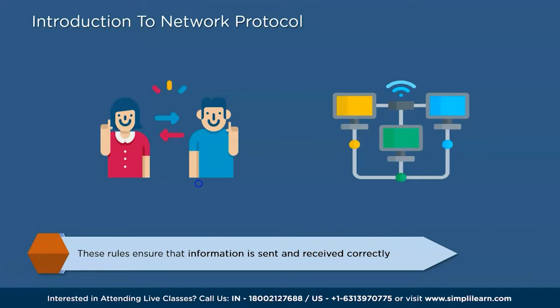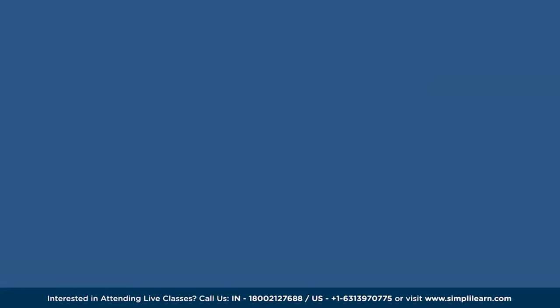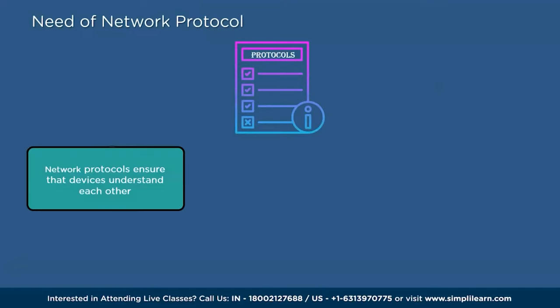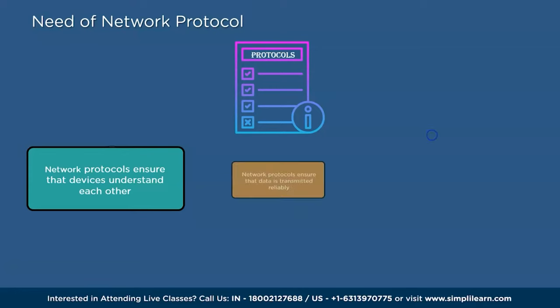Network protocols are like guidelines that devices follow when they communicate with each other over a network. Firstly, network protocols ensure that devices understand each other. Imagine if you and your friend were speaking different languages with no way to understand each other — communication would be impossible. Similarly, devices from different manufacturers with different functions need a common language or protocol to understand each other's signals and data.